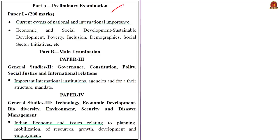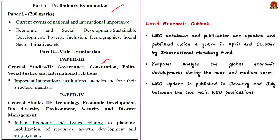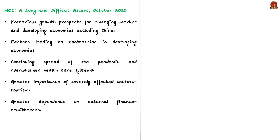The relevant syllabus for the analysis of this news article is highlighted here for your reference. In response to the growing demand for more frequent forecast updates, the World Economic Outlook update is also published in January and July between the two main World Economic Outlook publications, which are usually released in April and October. In today's analysis, we are going to discuss the main World Economic Outlook publication for October 2020.